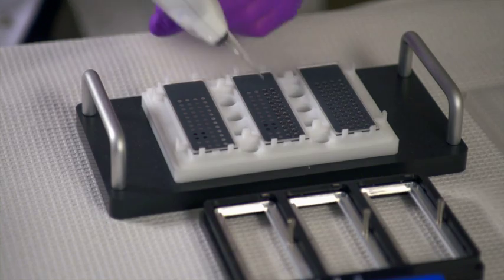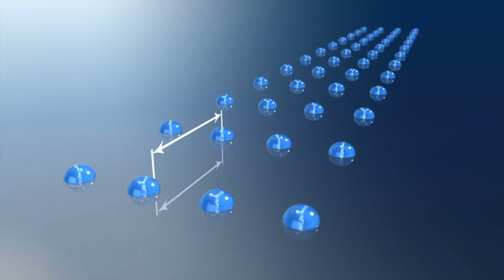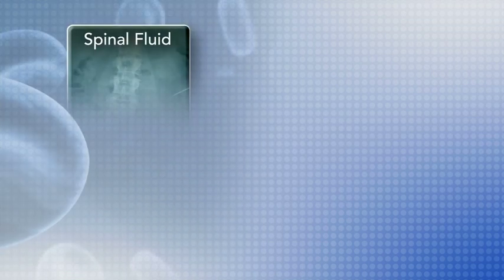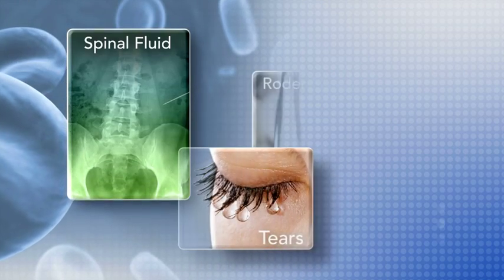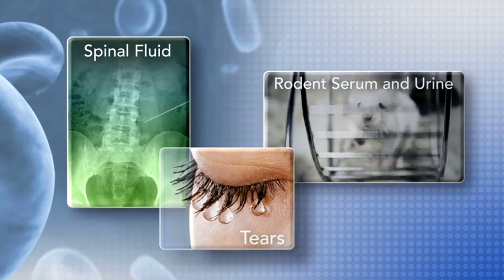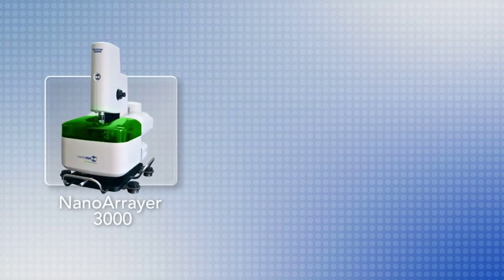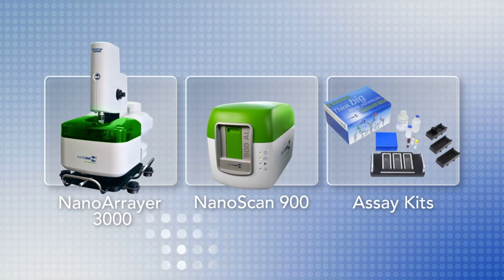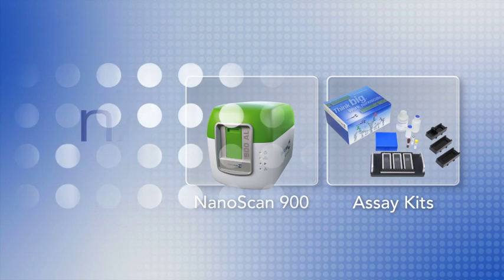NanoInk helps its customers address major proteomic challenges with miniaturized and multiplexed nanoarray assays. With small sample size requirements and ultra-sensitive detection capabilities, NanoInk assays can generate valuable protein biomarker data from rare and precious samples. The NanoInk platform makes it truly possible for the proteomic community to do more with less.